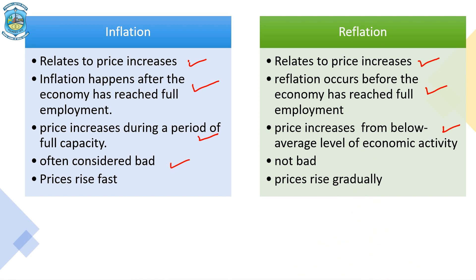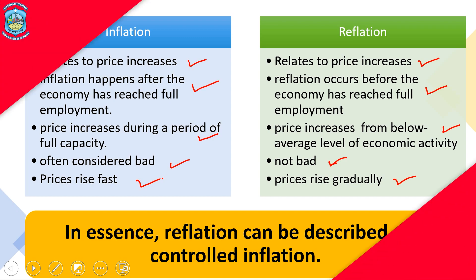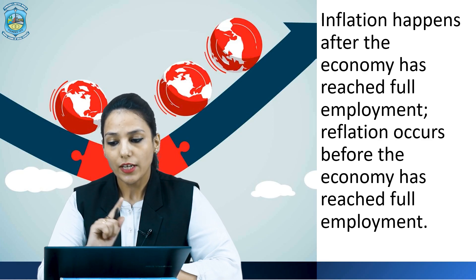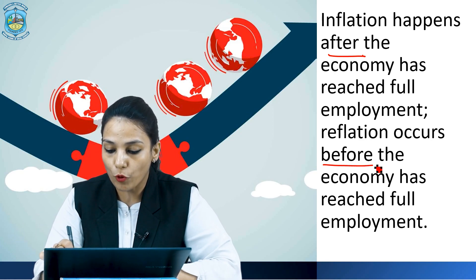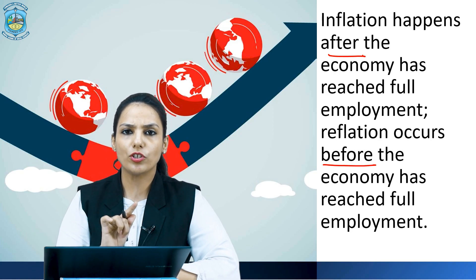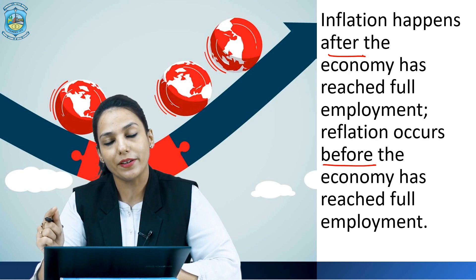Moreover, inflation is always considered bad because it decreases the purchasing power of the individual. On the other hand, reflation is not considered bad — it is actually deliberately undertaken by the government. In inflation, prices increase very fast, whereas in reflation, prices increase gradually. In essence, reflation can be described as controlled inflation. But the major difference is that inflation happens after the economy has reached full level of employment, whereas reflation occurs before. Both relate to price increase, but differ in the time period at which they occur.